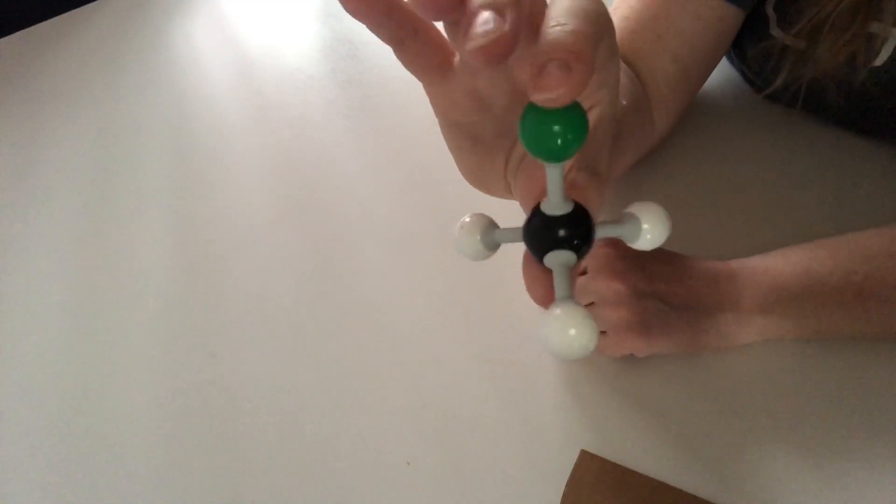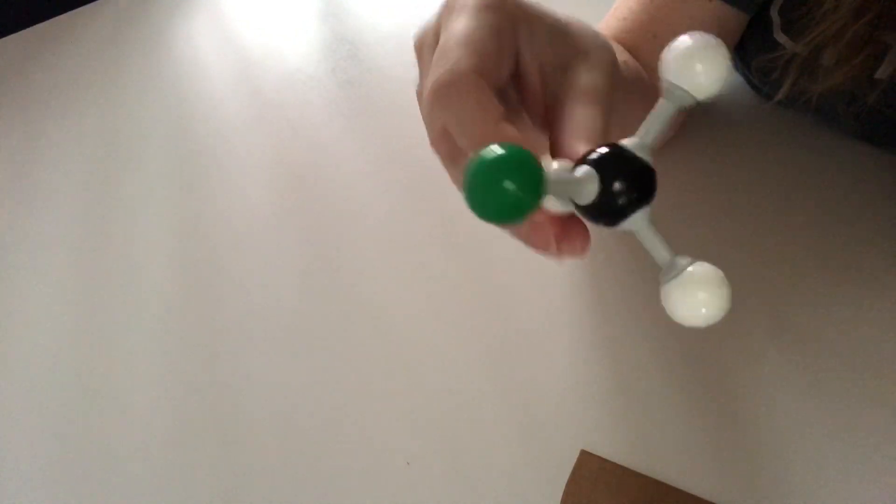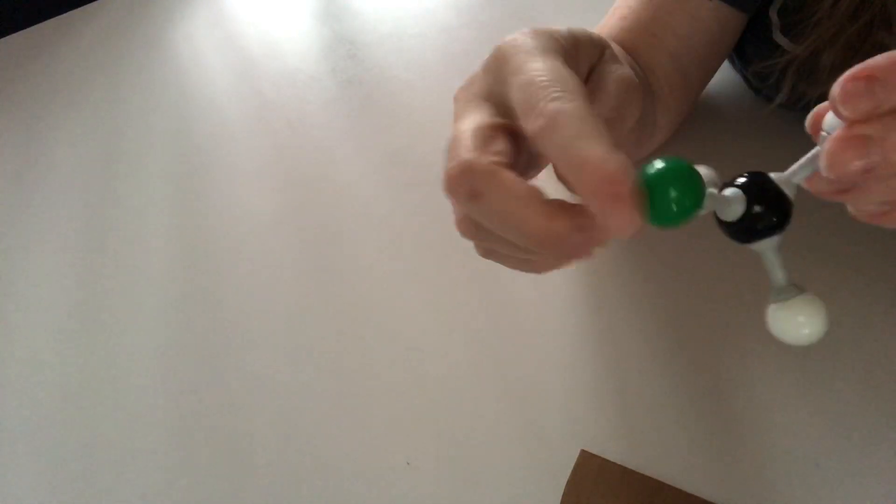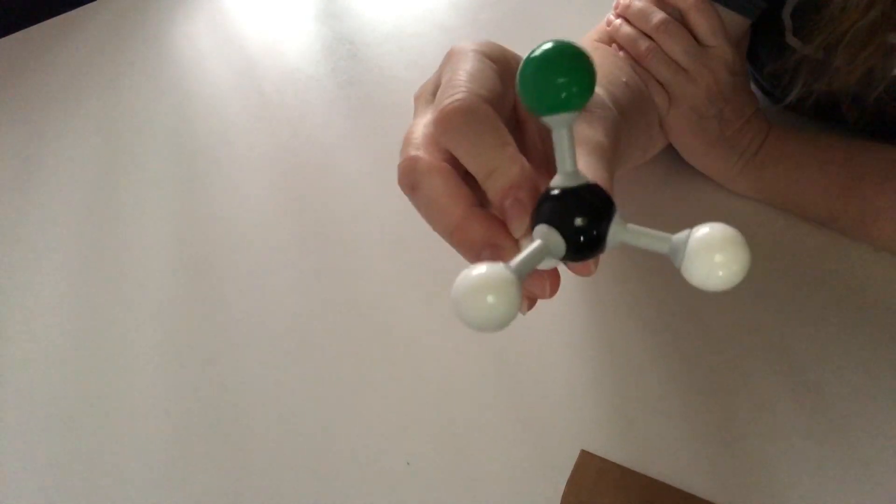Does it have an inversion center? Tetrahedra often do, but I've sufficiently broken the symmetry of this thing by putting that chlorine on there that I can't get an inversion center. No matter how I invert this, the chlorine is always going to end up someplace else. So there is no center of inversion.